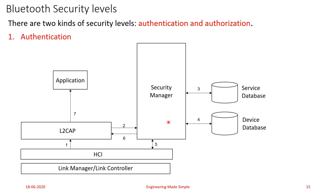Continuing the authentication steps: (6) the security manager grants the connection request to the requesting service, and the L2CAP layer sets up the link for further communication. Finally, when access is granted and the link is set up, the service provides the designated service to the application layer. This completes the authentication procedure in Bluetooth.